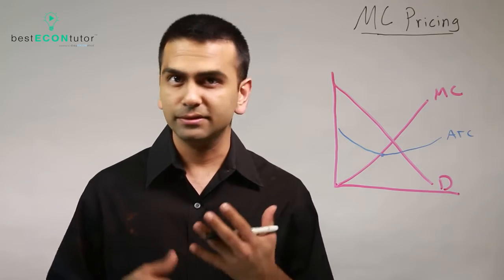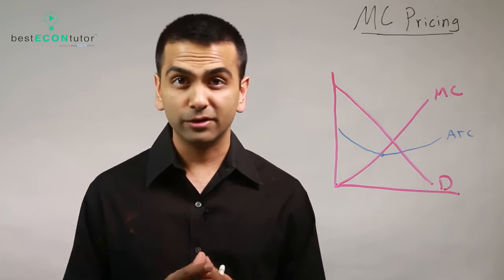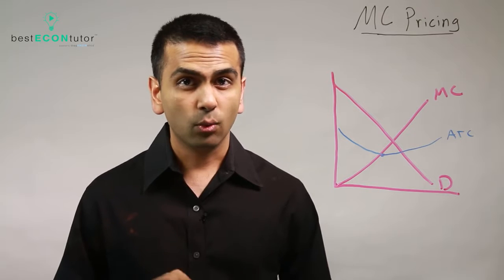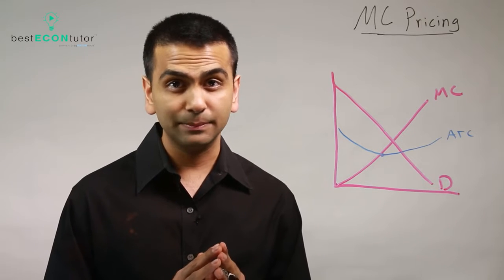So we just saw that monopolies have a deadweight loss in the market, so what can we do about it? Well, if you're the government of a country, can you try to lower the deadweight loss, maybe even get rid of it? Well, there's one way you can get rid of the deadweight loss and that's called MC pricing.